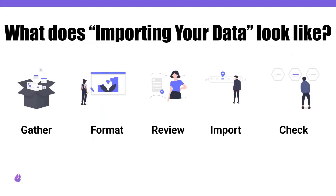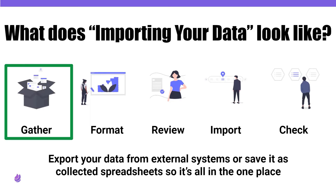What does the importing of data process look like? There are five main steps to the process and we have a deep dive set of resources for each step. The first one is gather. As its name would suggest, gather all of your data, make sure it's in one place and in an Excel spreadsheet format. This might be exporting your data from external systems as a CSV file or an Excel spreadsheet, or saving all of your collected spreadsheets in one place so that you have a good strong beginning to spring off from.